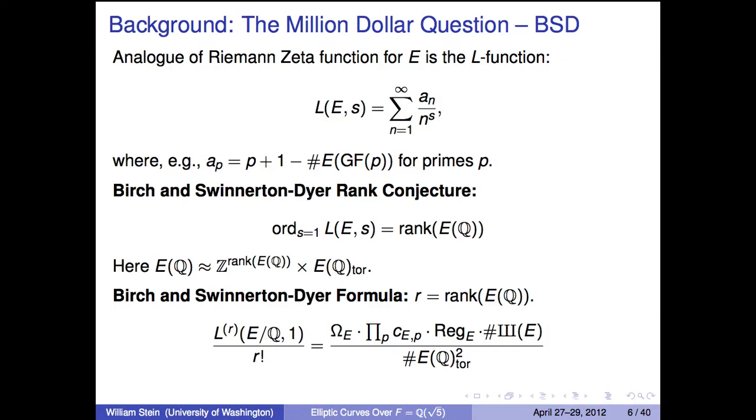One million dollar question that ties together the arithmetic of elliptic curves is the Birch and Swinnerton-Dyer conjecture. That involves a quantity whose definition looks much like the Riemann zeta function, except instead of one over n to the s, you replace all the ones by these numbers a sub n, which are defined by counting points on the elliptic curve modulo various prime numbers.